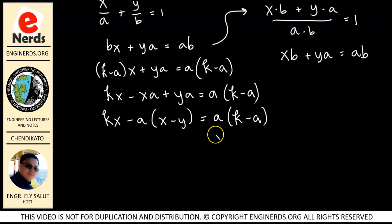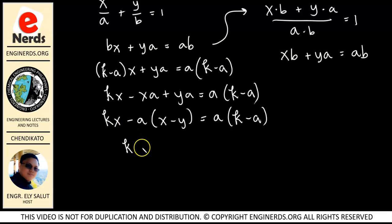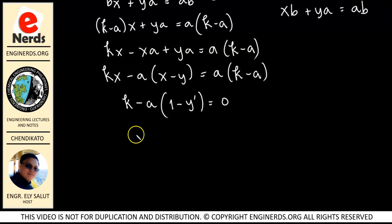Taking the derivative of our equation, the right side — which is a constant — becomes 0. The derivative of kx is k. Then minus a times the derivative of x minus y, which is 1 minus y prime, equals 0. Isolating a, we transpose to get a is equal to k over 1 minus y prime.